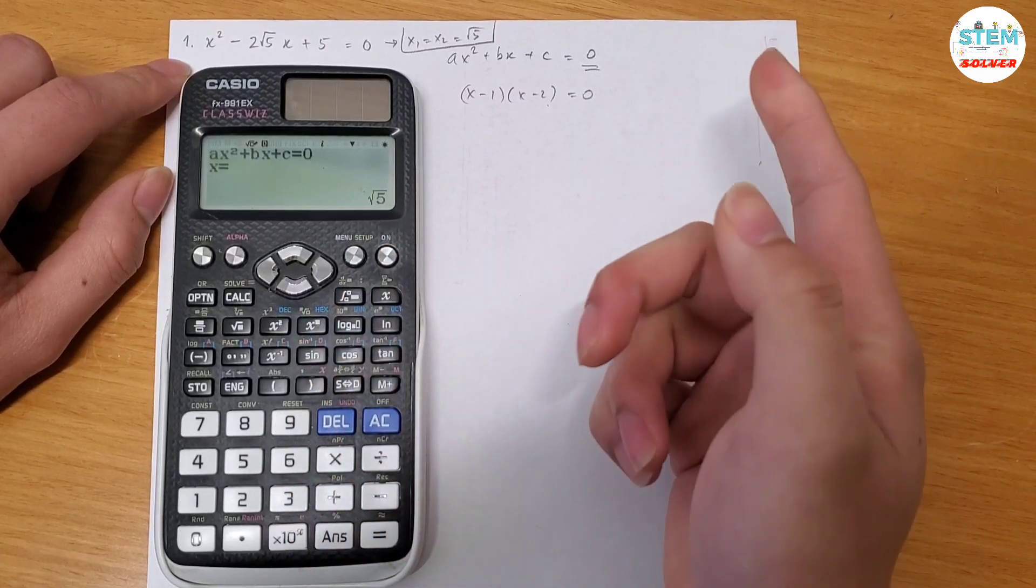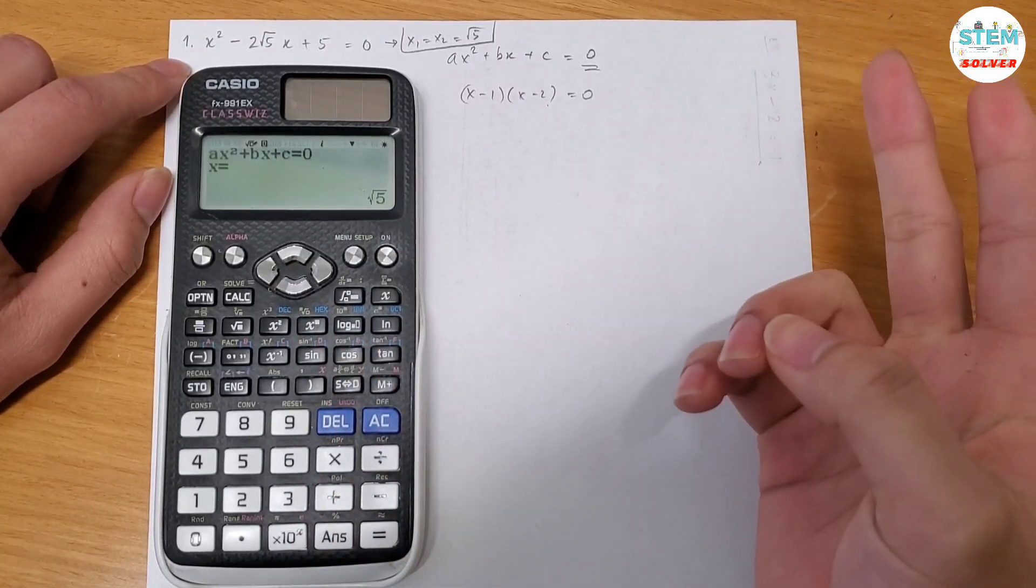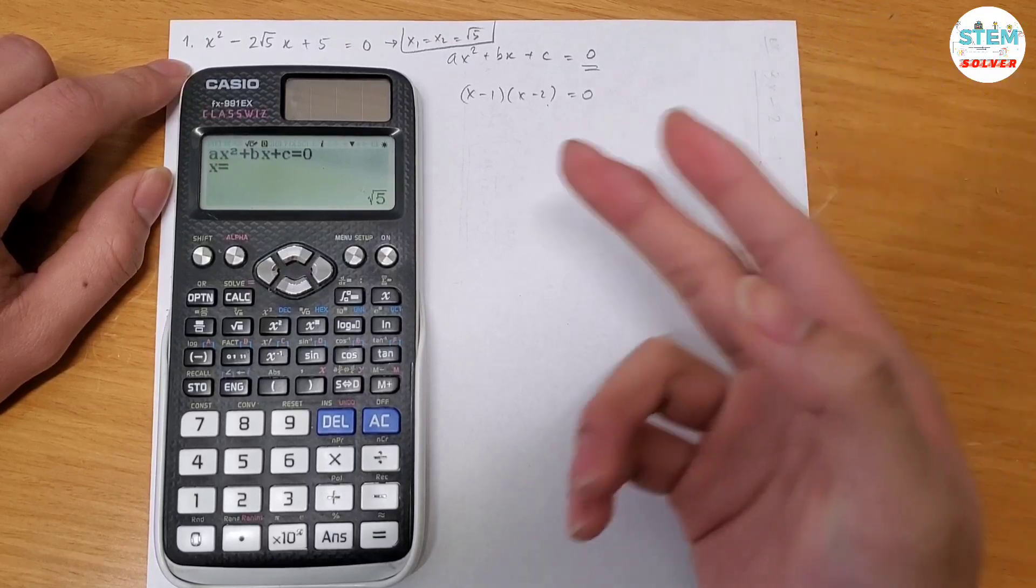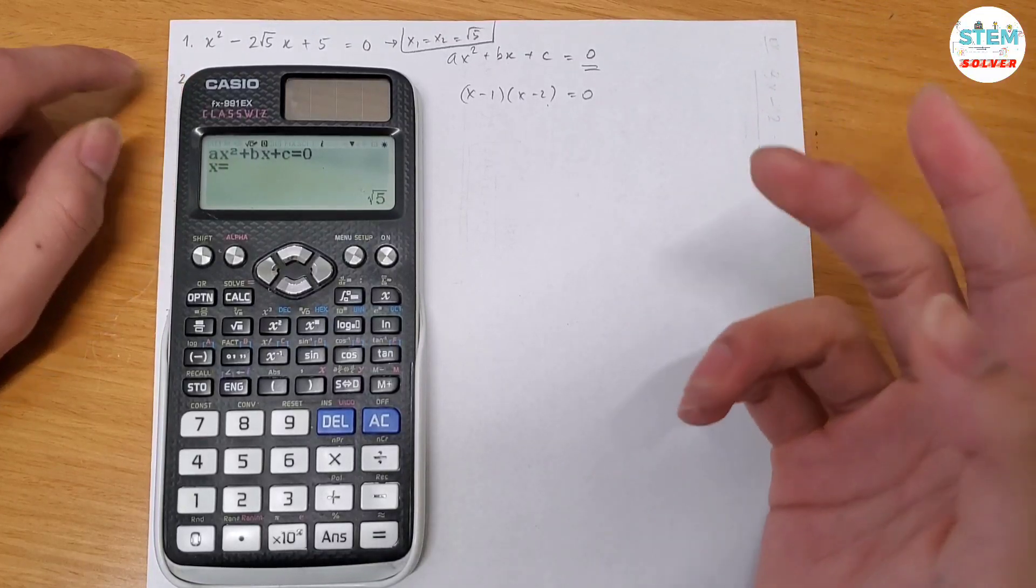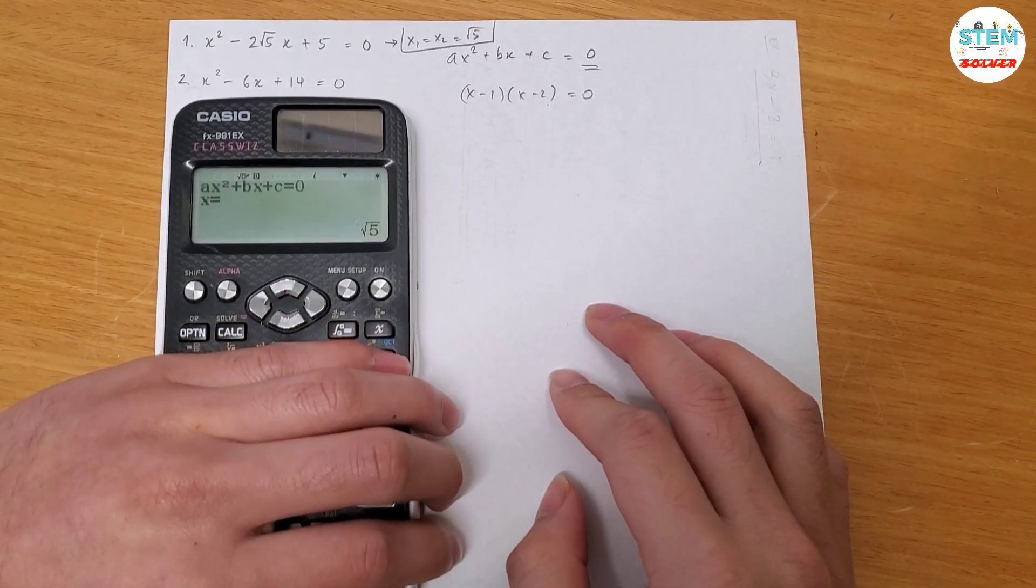So if it's something else, it has 2 different roots. We'll show you 2 different values. Okay, let's go over the second example.